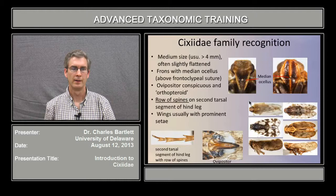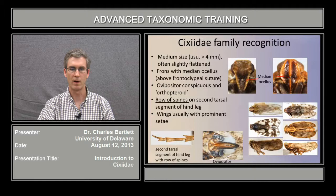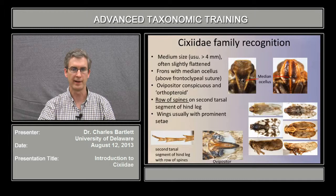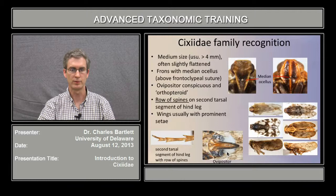6-seeds are recognized mainly by the absence of features found in other planthopper families. They are medium size, usually more than 4 millimeters, often slightly flattened. The fronds bears a median ocellus just above the clipeus, which is found only in the 6-seidae and in the canaridae.